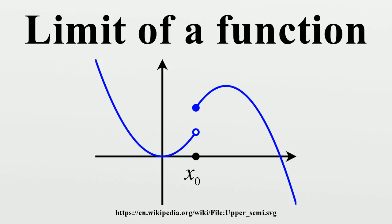A more general definition applies for functions defined on subsets of the real line. Let A be an open interval in ℝ, and P a point in A. Let F be a real-valued function defined on all of A except possibly at P itself. It is then said that the limit of F as X approaches P is L if, for every real ε > 0, there exists a real δ > 0 such that 0 < |X − P| < δ and X ∈ A implies |F − L| < ε. Here again the limit does not depend on F being well defined at P.